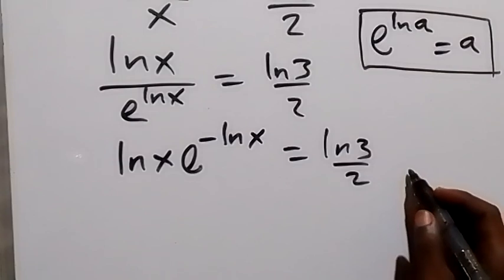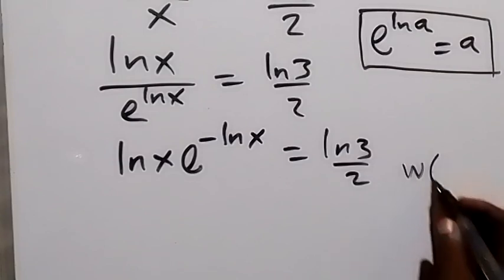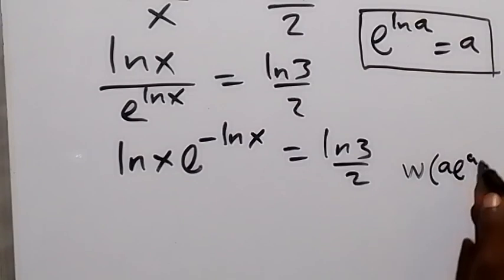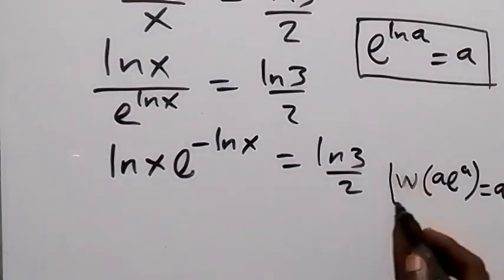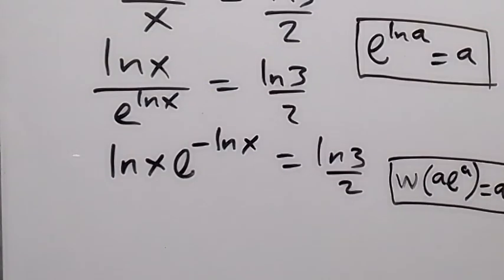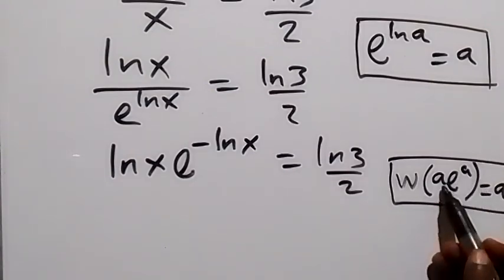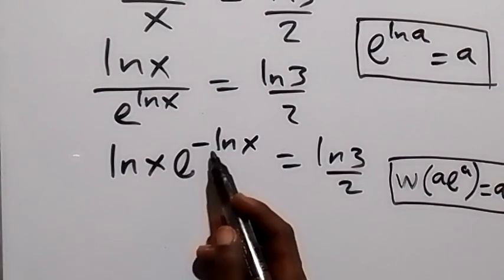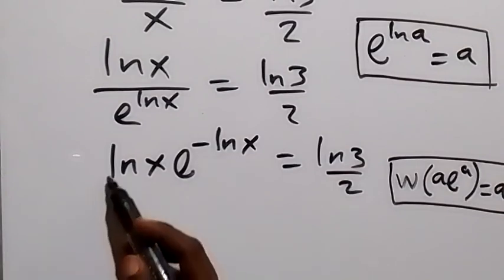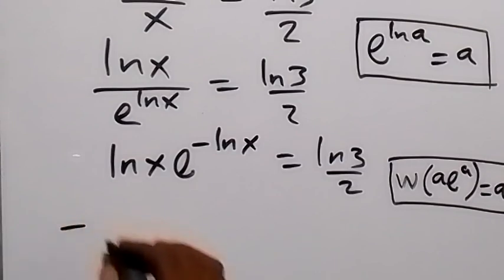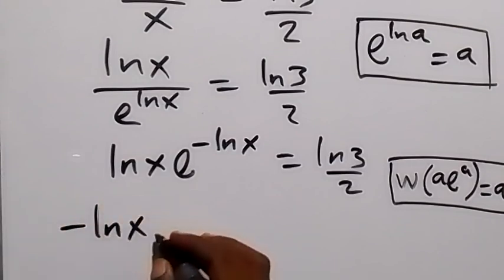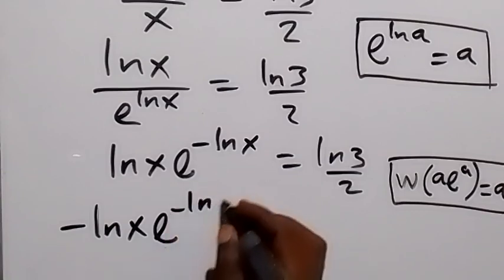We want to introduce the Lambert W function. Recall that W of a·e^a equals a. To match that form, the power of the exponent and the coefficient must be the same. Since the power is negative, we multiply both sides by minus 1. This gives us: minus ln(x) times e raised to the power of minus ln(x).